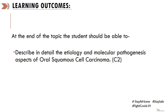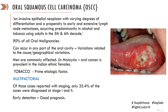Last week I briefly discussed the risk factors associated with oral squamous cell carcinoma. Today I am going to discuss this topic in detail. Oral squamous cell carcinoma is an invasive epithelial neoplasm showing varying degrees of differentiation, observable histopathologically under a microscope. It has a propensity to show early and extensive lymph node metastasis and occurs predominantly in alcohol and tobacco users, with incidence generally seen in the fifth and sixth decades of life.